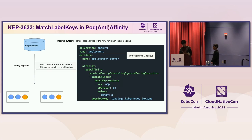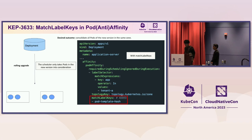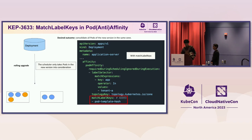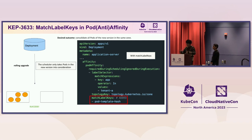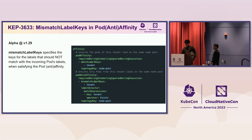New pods could end up having only one pod in a zone, which we don't want. Using match-label keys with pod-template-hash — the label key all pods from a deployment have — the value differs between each version. This allows the scheduler to consider only the same version's pods during calculation. The scheduler ignores the old version's pods and only sees the new ones, so all new pods are placed in the same zone.